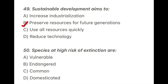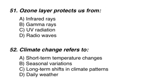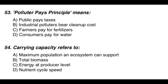Question 50: Species at high risk of extinction are — the correct option is B — endangered. Question 51: The ozone layer protects us from — the correct option is C — UV radiation. Question 52: Climate change refers to — the correct option is C — long-term shift in climate patterns.